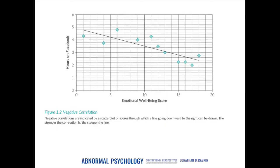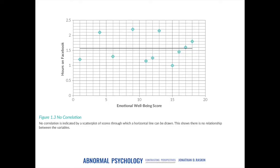But if we found a negative correlation, it would look just the opposite. We would find that as the number of hours on Facebook increased, emotional well-being decreased. And of course, it's also possible that we might find there's no relationship between these two variables — they're not related at all. If we found no correlation, it would look something like this. Notice that the line would be flat rather than going up or down.